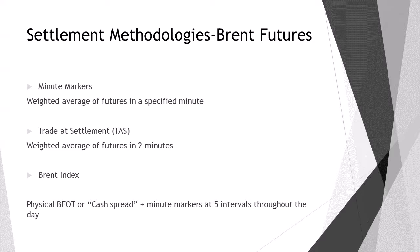Generally, this will be from 4:29 to 4:30 Singapore time, and again from 4:29 to 4:30 London time. On the Brent expiry day, when the futures expire for the month, the minute markers are at five intervals throughout the day in order to accommodate their methodology for the ultimate settled price for Brent Futures. There's also the Trade at Settlement, or TAS. This is the weighted average of futures in the final two minutes of the ICE exchange trading day, which is 7:28 to 7:30 London time. The exchange is still open until 11pm, but the pricing through the pricing agencies and the trade at settlement prices are all done by 7:30pm every day.